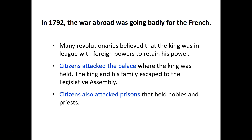A month later, another group of Parisians attacked the prisons in Paris. In these prisons, nobles were being held, as well as priests perceived to be against the Revolution. In total, about 1,200 of these prisoners — including some common prisoners — were killed in the attacks.